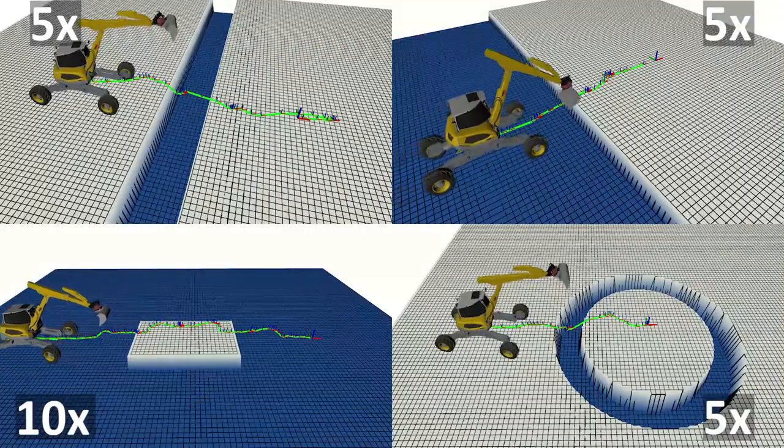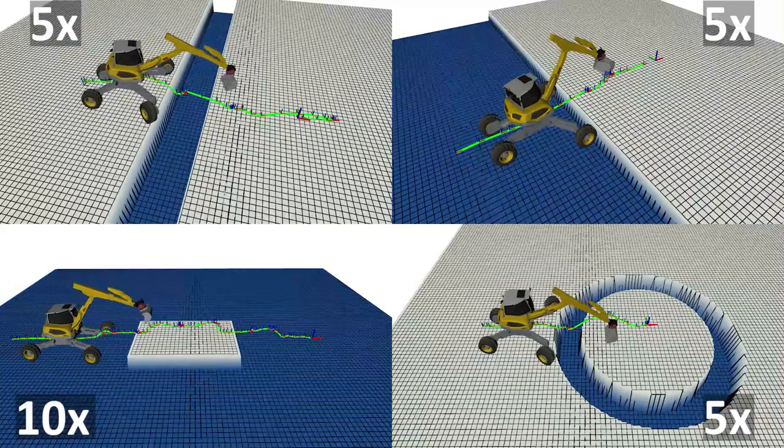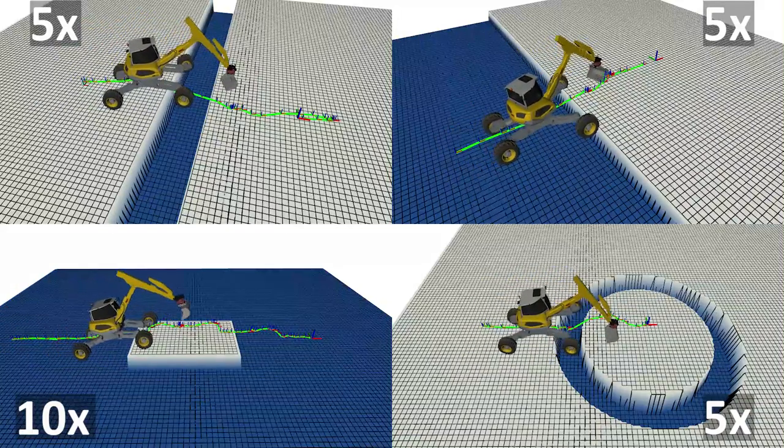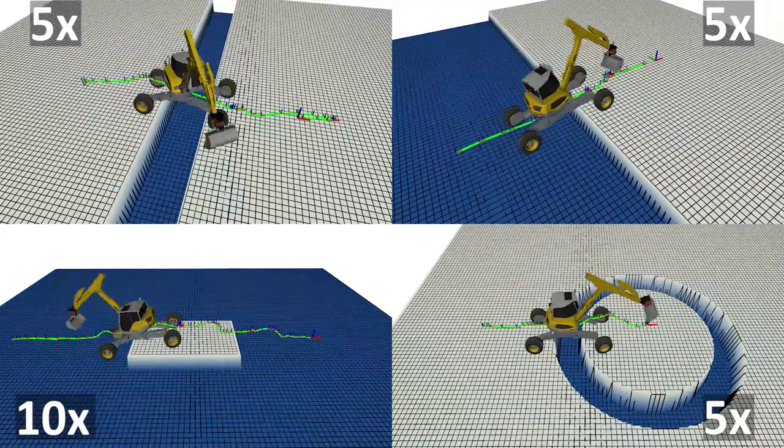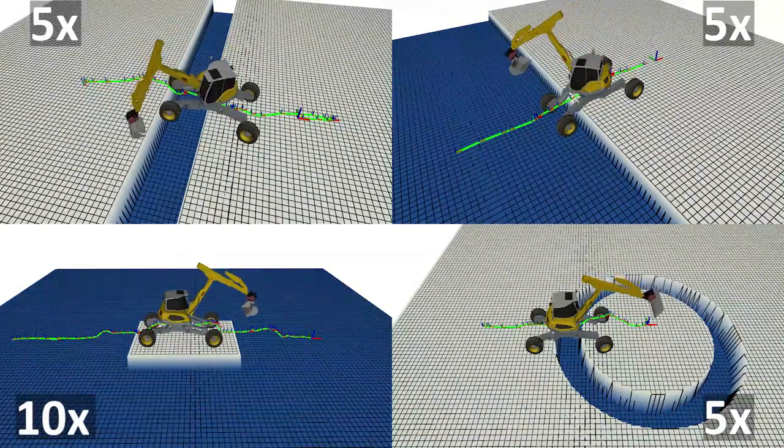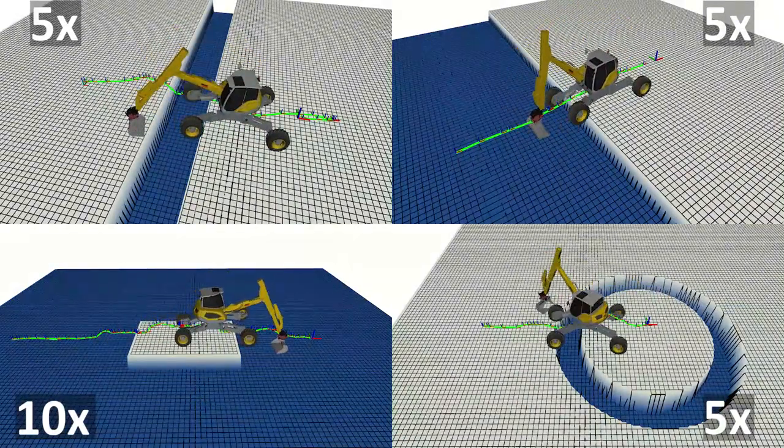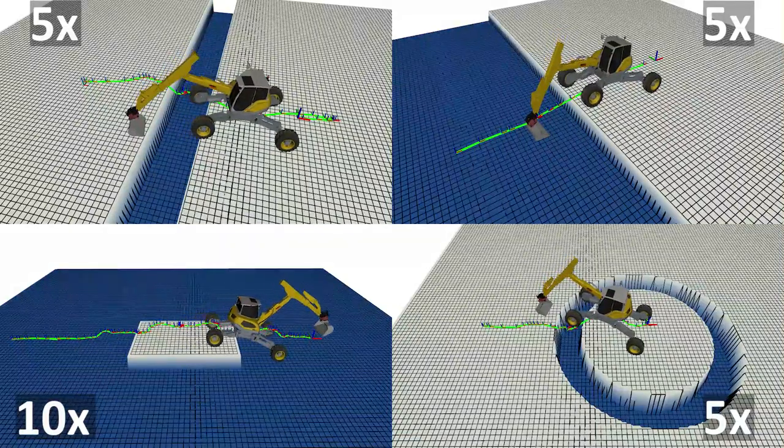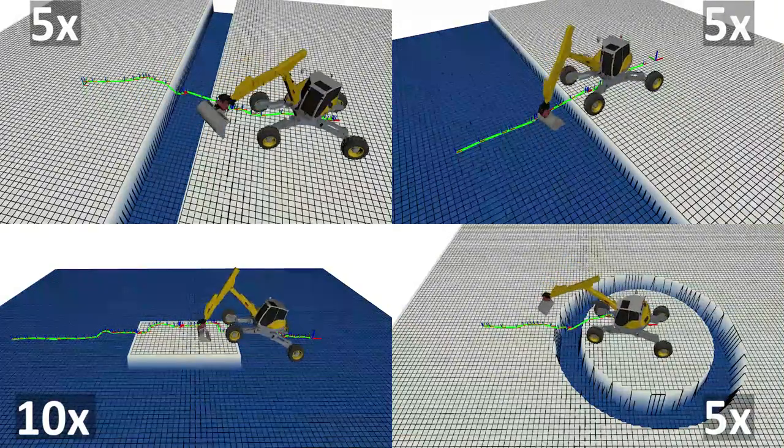A naive initial guess such as linear interpolation to the goal point gets stuck in bad minima. Our two-stage algorithm ameliorates this problem. Initializations computed using our RRT planner are much closer to the feasible solution and the optimization does not get stuck.